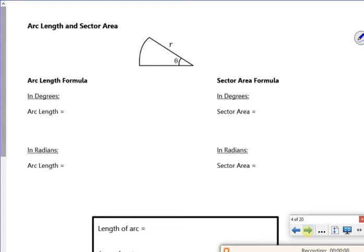So from GCSE, if you wanted the length of this arc here, it's part of the circumference, so it's part of 2πr. And what you did, you said the angle θ divided by 360, that would give me the arc length. So this bit here is the arc length.